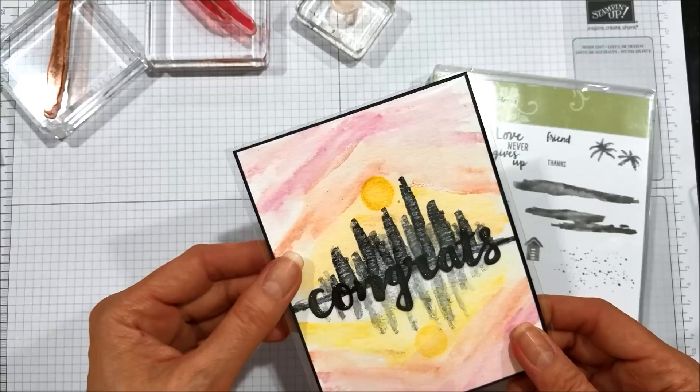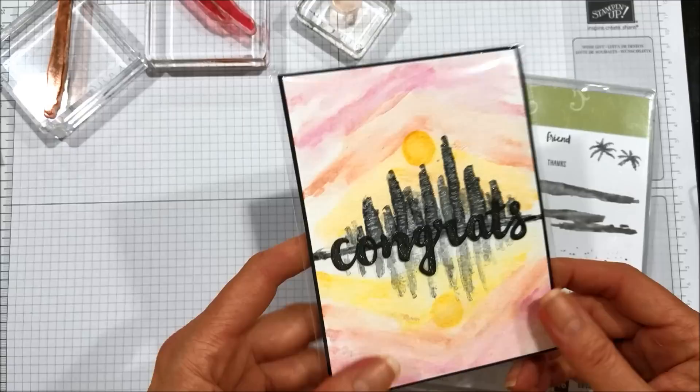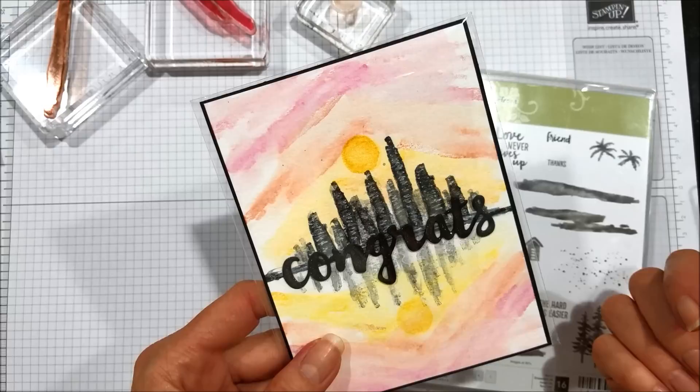For the base layer you're going to need a four and a quarter by five and three eighths piece of watercolor paper, preferably about 140 pounds. That seems to work the best and gives an overall smoother appearance.